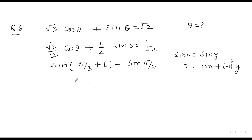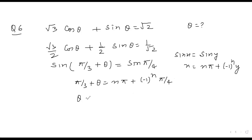From here, π/3 + θ = nπ + (−1)ⁿ · π/4, so θ = nπ + (−1)ⁿ · π/4 − π/3, which is the general solution.